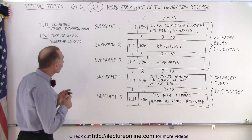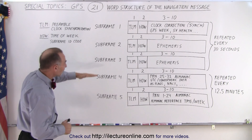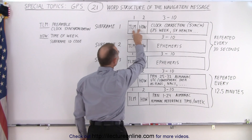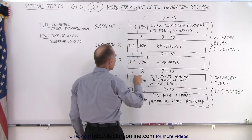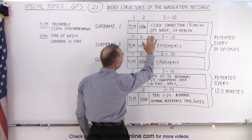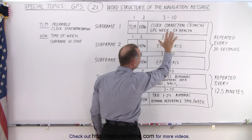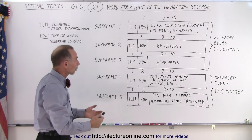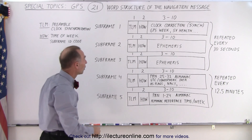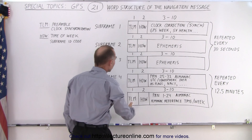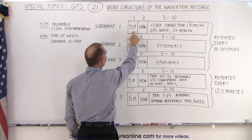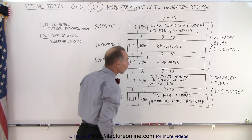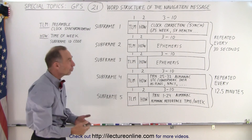Also notice that for every one of the five sub-frames, we have 10 words. The first two words are exactly the same in each of these sub-frames, and the next eight words contain the specific data for that particular sub-frame. Each word contains 30 bits. Notice that the first word is called the TLM word — the telemetry word — and the second word is called the HOW word, or the handover word.